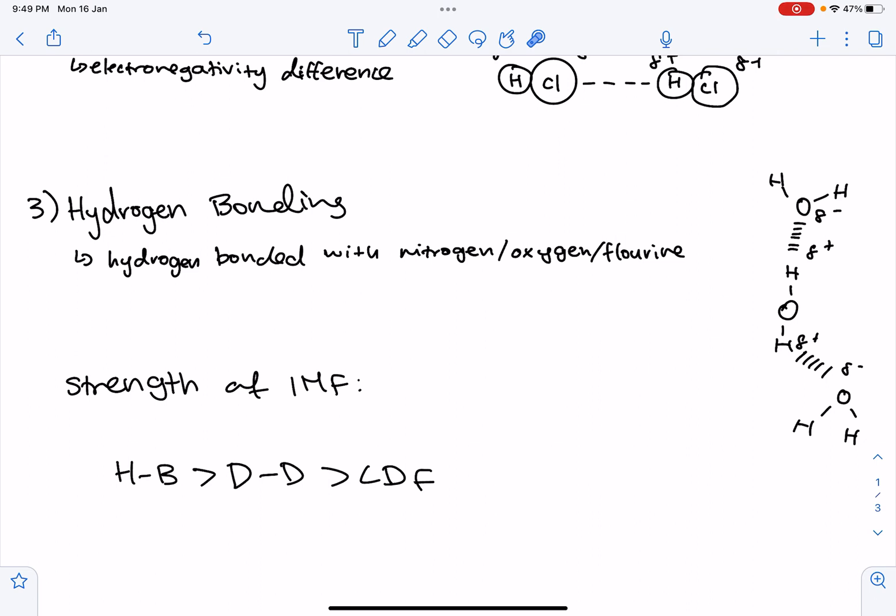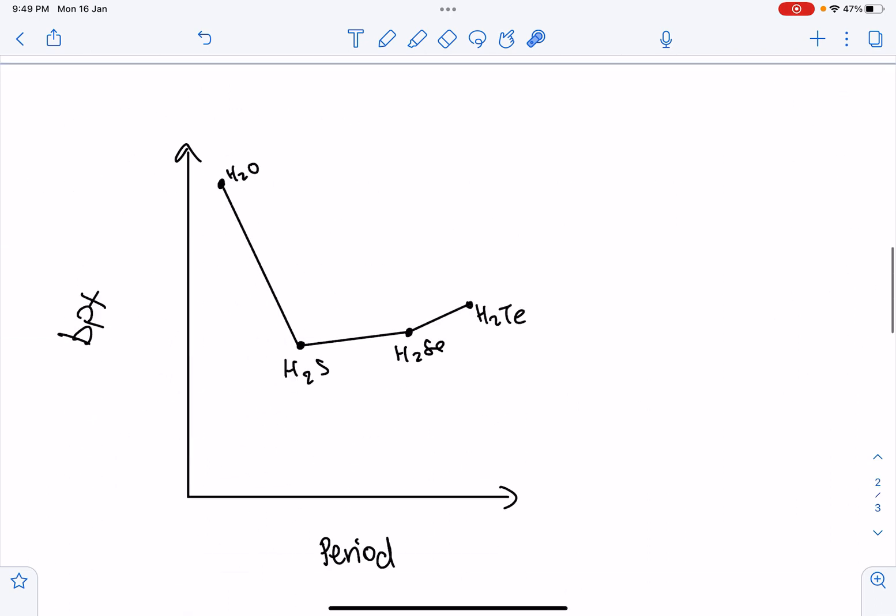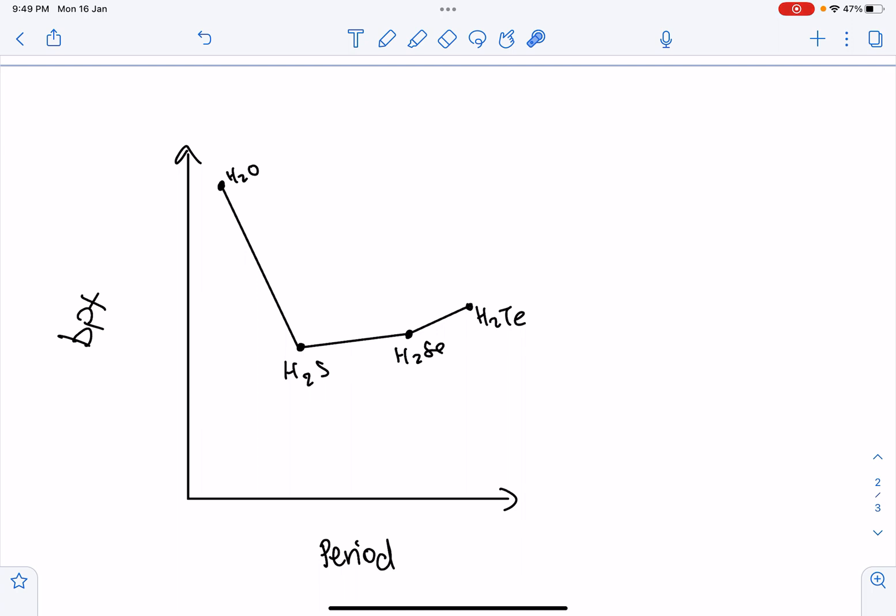So the strength generally for intermolecular forces is hydrogen bonding is the strongest, then dipole-dipole forces, and then the London dispersion forces. Here's an example of this in terms of group 16. As you can see, H2O water has the highest boiling point because it has both hydrogen bonding, dipole-dipole, and London dispersion forces.